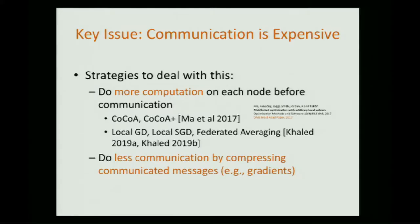There are two strategies to deal with this. Either we send full D-dimensional vectors but do more computation per node hoping that more massive computation leads to fewer iterations and fewer communications. Or, orthogonally, we do even gradient descent as before but compress what we send. This talk is about the latter: compressing gradients.